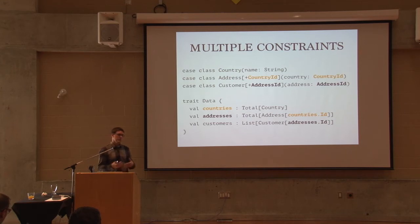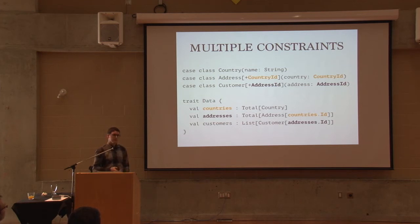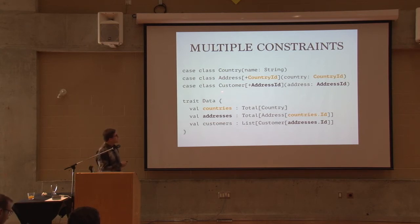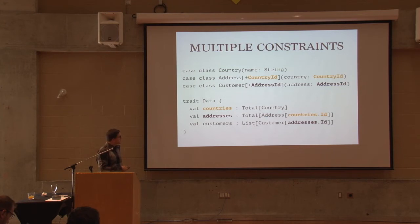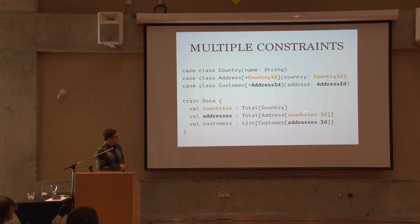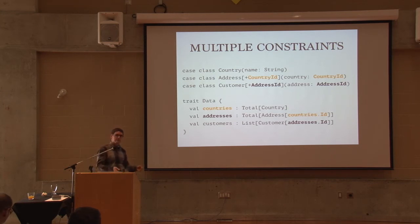Of course we can have multiple tables. Here's an example with three collections: customers have addresses, and each address references a country. We pass a type parameter to Customer for the address ID, and to Address we pass a country ID. We have two total maps to receive those incoming references, and customers reference addresses using addresses.id. This scales to multiple collections.